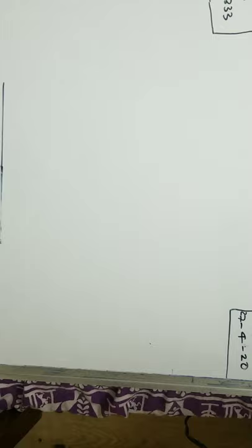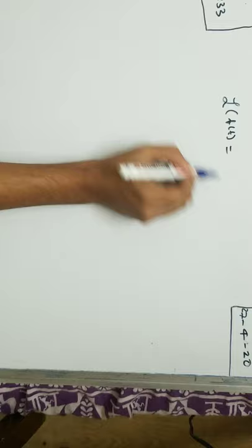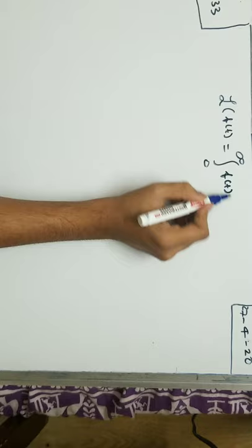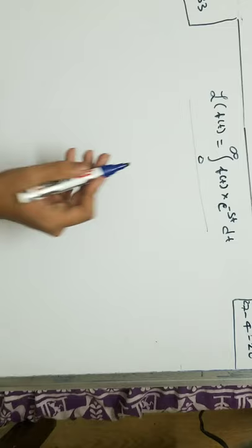So Laplace transformation function is defined as: Laplace operator of f(t) equals integration from 0 to infinity of f(t) times e to the power minus st dt. This is the Laplace transformation function and we are going to use this to find the Laplace transformation of f(t) equals t.